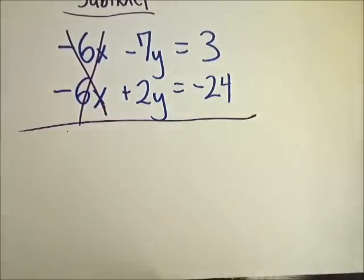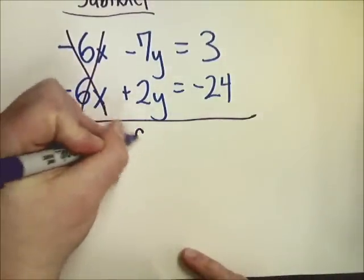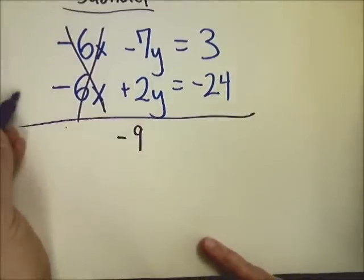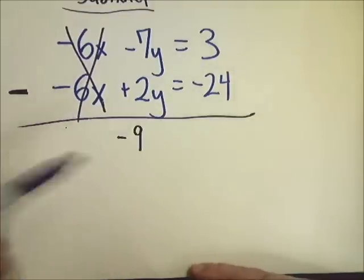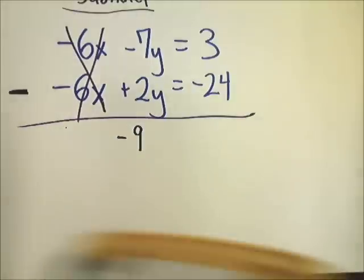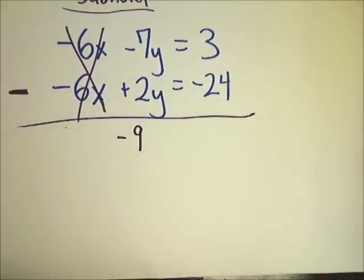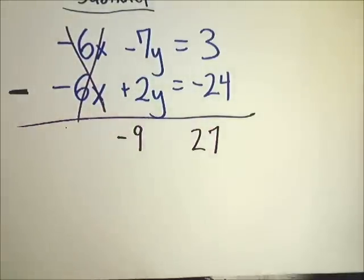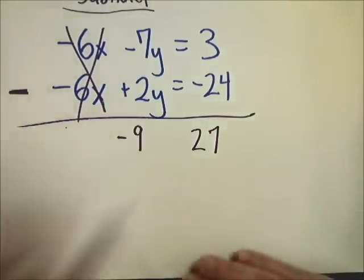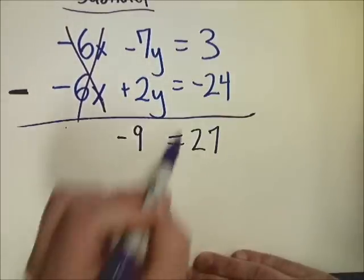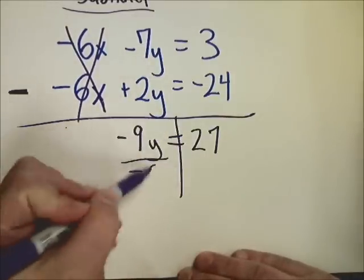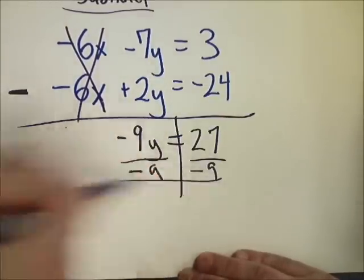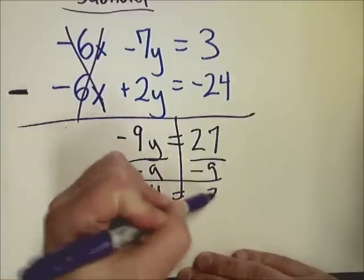So this brand of elimination is subtraction. I do negative 6 minus negative 6, which is the same as negative 6 plus 6, which eliminates the x terms completely. Then I do negative 7 minus 2, which gives you negative 9. And then you do 3 minus negative 24 and you get positive 27. So divide by negative 9, your y value is negative 3.